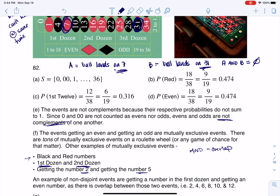So an example of a non-disjoint event, right, is a number in the first dozen and getting an even number. Because there is overlap, right? All of these numbers here, they are in the first dozen. And on top of that, they're even. All right? So the last thing we have is, are these events even and first dozen independent?